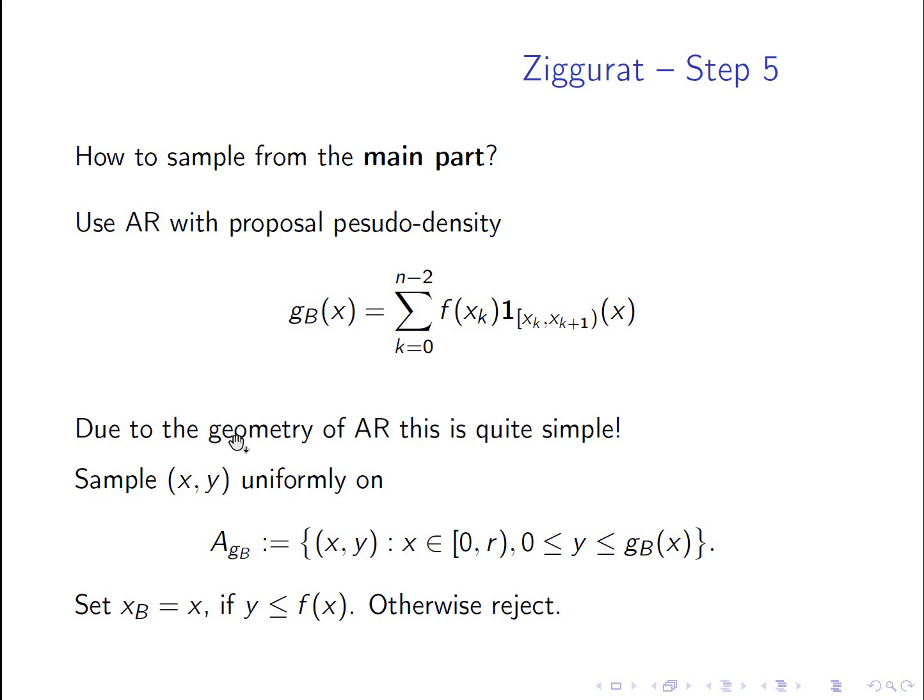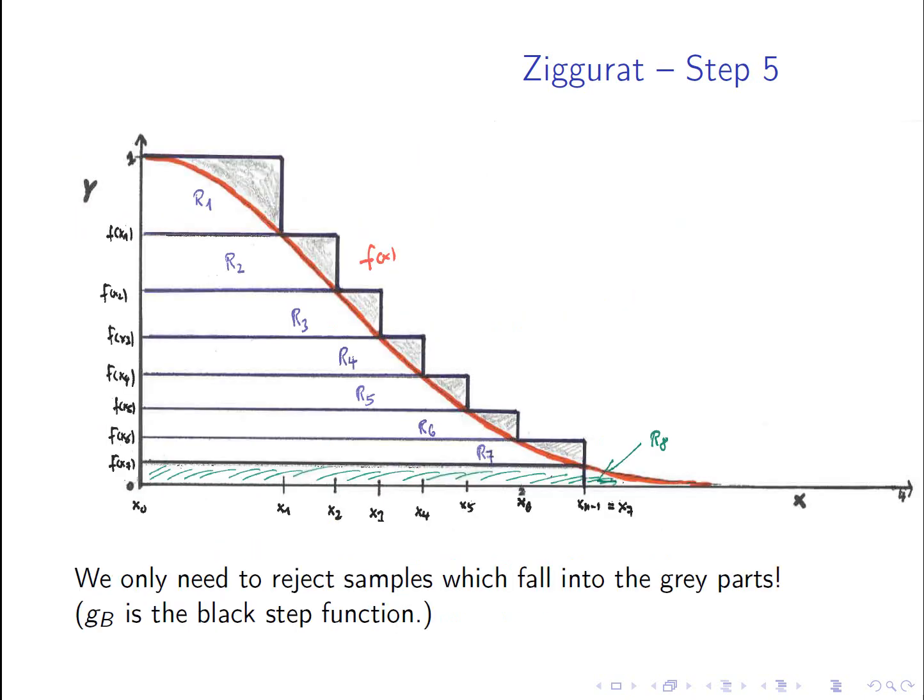And as I said, accept-rejection is here really simple due to the geometry of accept-rejection sampling. And that's why we spent so much time to introduce accept-rejection sampling, not only by the short proposition, but in a long way with the three steps of the ideas. So we sample, as I said, X and Y uniformly on A_GB. Well, A_GB is the set of X and Y's, X between 0 and R and Y between 0 and GB, boundaries included. So it's the area under the pseudo density. And if Y is less or equal than F of X, then it's also under the red curve and we keep the first component, otherwise we reject.